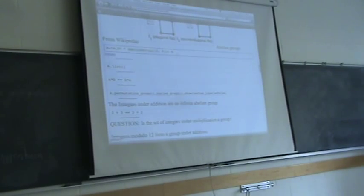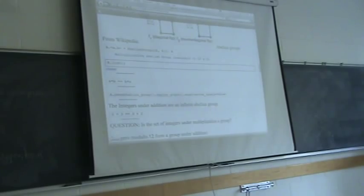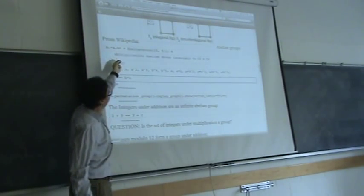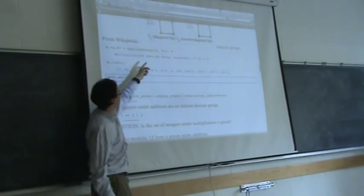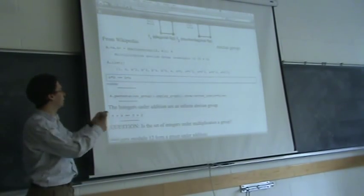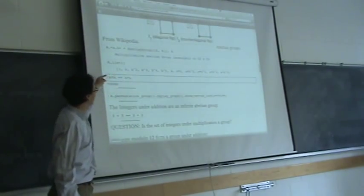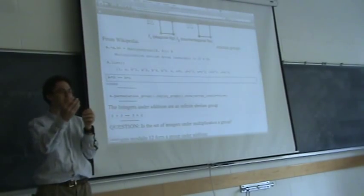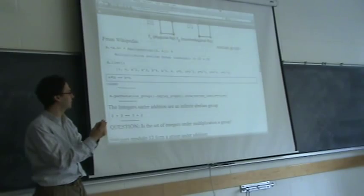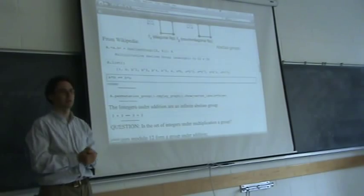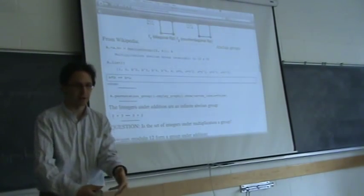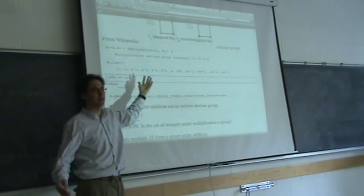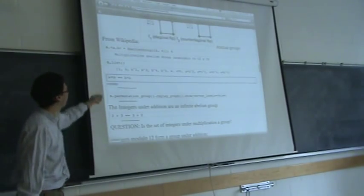Here's another example of a group — an abstract abelian group with twelve different elements. It's generated by two things: one element A with the property that when you square it you get the identity, and another element B with the property that when you raise it to the sixth power you get the identity. All ways of multiplying these together give all the elements of the group. Any time you see A squared you replace it by one, any time you see B to the sixth you replace it by one, and you get to permute A and B. That gives you a group.